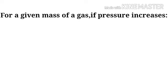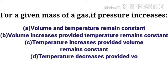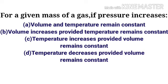For a given mass of a gas, if pressure increases, the options are: Option A — Volume and temperature remain constant. Option B — Volume increases provided temperature remains constant. Option C — Temperature increases provided volume remains constant. Option D — Temperature decreases provided volume remains constant.